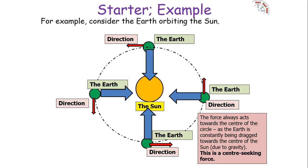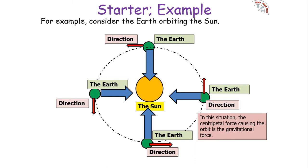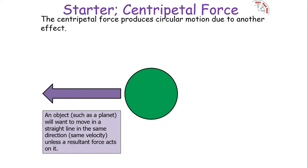The force always acts towards the centre of the circle. In this case, it's like the Earth is constantly being dragged towards the centre of the Sun due to gravitational attraction — it's a centre-seeking force. So in this situation, the centripetal force causing the orbit is the gravitational force.